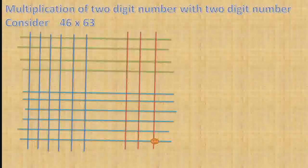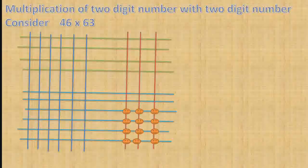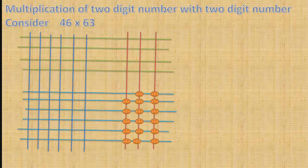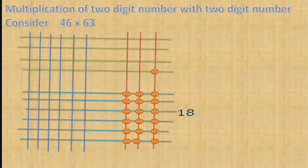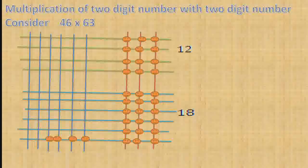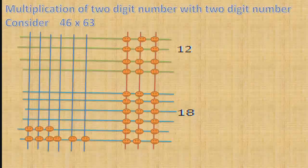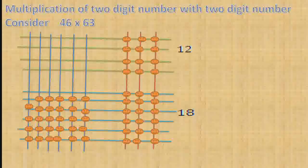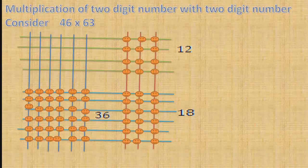Then count the points of intersections in each region. The first region gives 18, write 18. The next region gives 12, write 12. The next region gives 36, write 36.